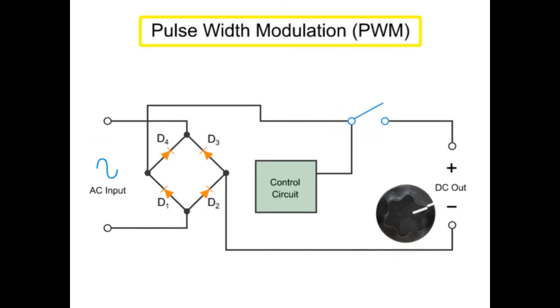Pulse width modulation, or PWM, is a method that uses digital signals to control power applications. In this example, a PWM uses a full-wave rectifier to convert an AC input voltage into a DC output level of 300 volts.